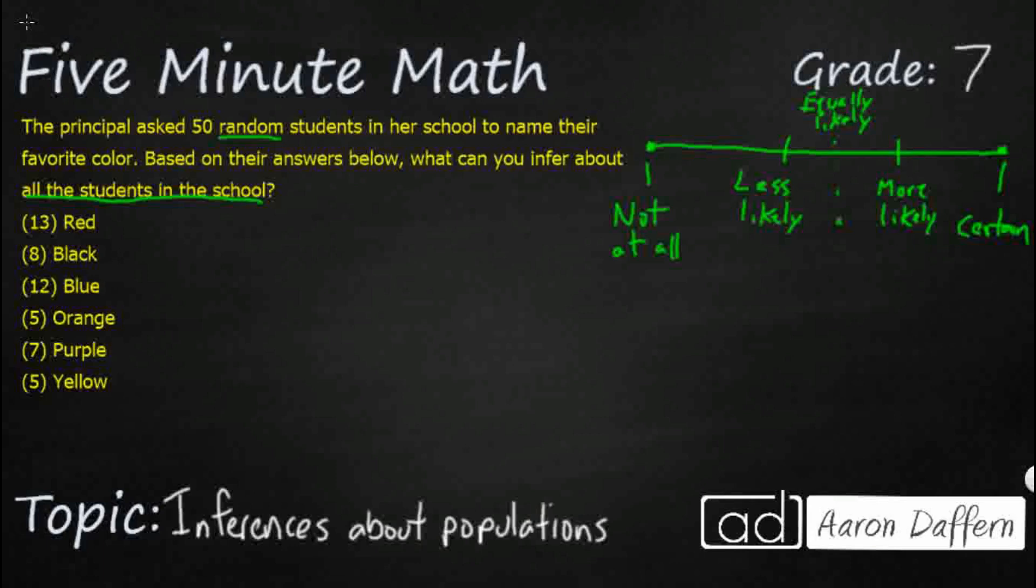So we can compare these two and say students are more likely. Let's just come up with a few examples here to choose. Let's just take a look at some of our examples. We've got red and black. Let's just take those two. More likely to choose red. I'm going to put the number here just so we can see it. Then black.